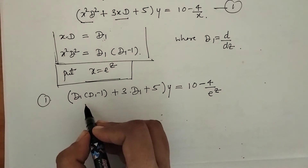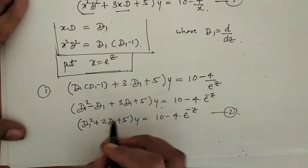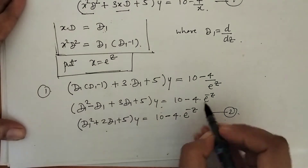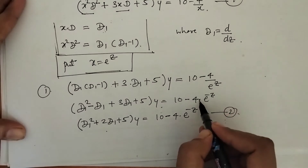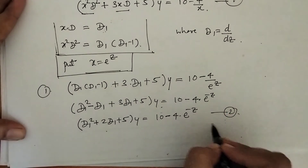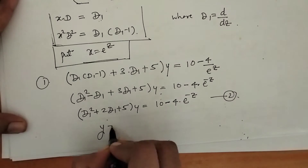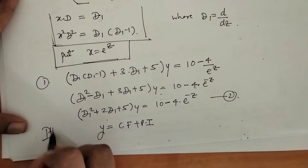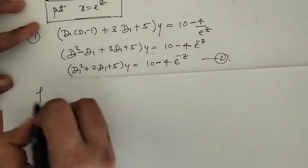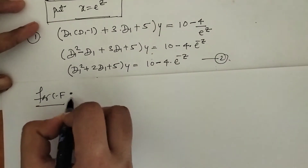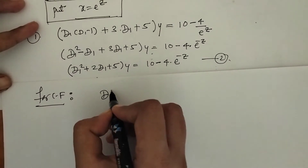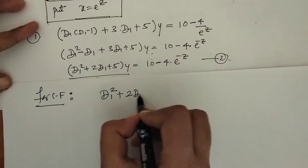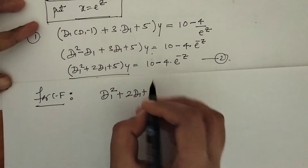On simplification, we get a new differential equation in variable z. We write 1 upon e raised to z as e raised to minus z. Now we have to find its solution as y equals CF plus PI. For finding CF we need the auxiliary equation, which is given by setting f(D1) equals zero.